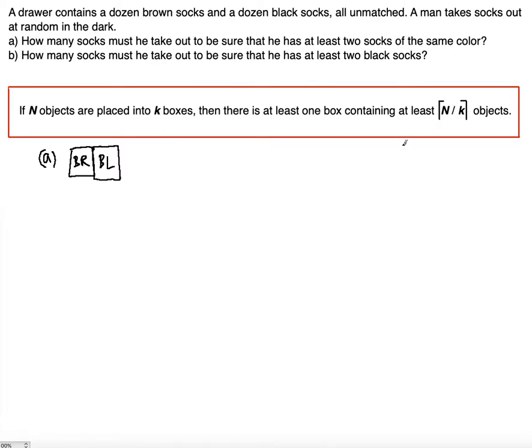We need to find the value of N. So N is going to be the unknown. Thus N will be divided by two. How many socks must he take out is the N value. It says he has to have at least two socks of the same color. At least two means greater than or equal to two, because at least means two is the least value you can get.